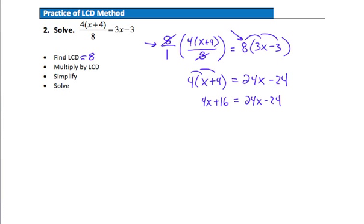24x minus 24 on the right side. Alright, let's see. I've got variable terms on both sides, so I'm going to get rid of or remove the smaller one, which is this 4x. So I'll subtract 4x from each side. Then I'll have 16 is equal to 20x minus 24.